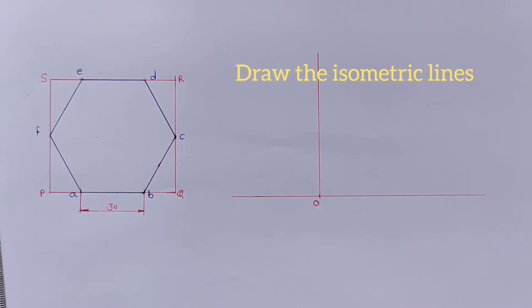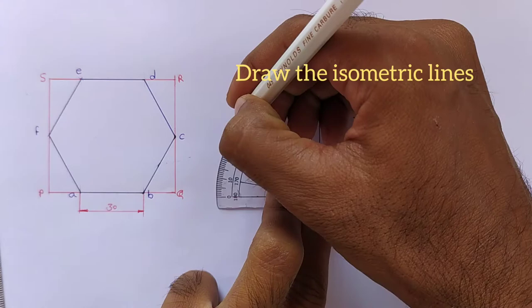Then draw the lines with 30 degree angle to the horizontal line from point O to the left side and right side.